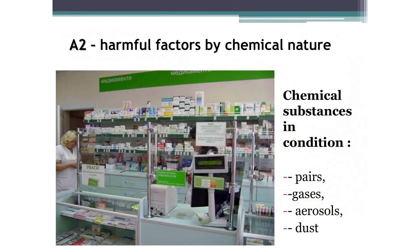Medical staff is also affected by harmful factors of a chemical nature. There is a large amount of chemicals in any hospital, which can be present in various forms: vapors, gases, aerosols or dust. These chemicals can cause allergies, dermatitis or bronchial asthma. To combat this problem, it is recommended to use ventilation and to properly store medicines in hermetically sealed boxes.